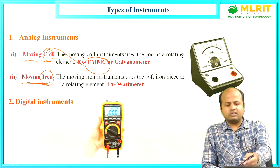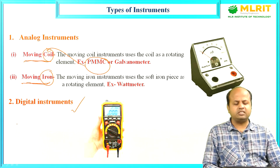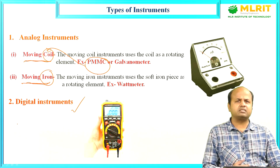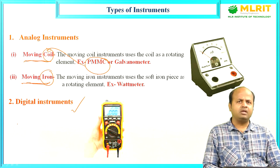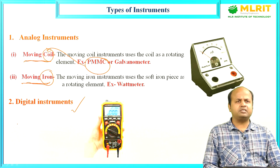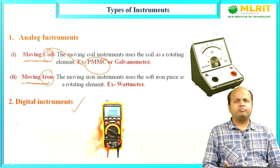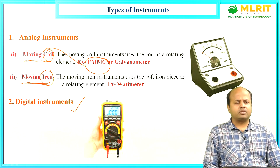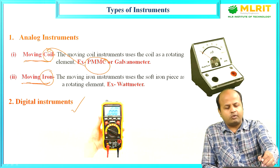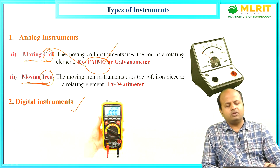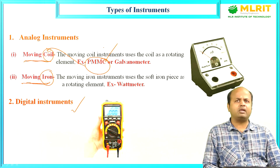The second type is digital instruments. In digital instruments, the display is in digital form and they have a different mechanism. I will be discussing digital instruments in future video lectures. For now, I will focus on PMMC, which is a moving coil based analog instrument.